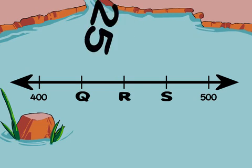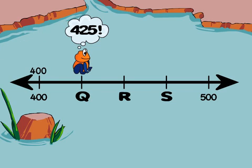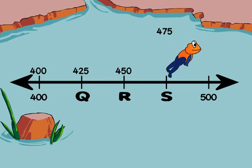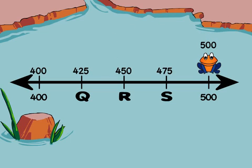Step three, now we can skip count by 25 from 400 to 500 to label the marks: 425, 450, 475. That lets us identify points Q, R, and S.